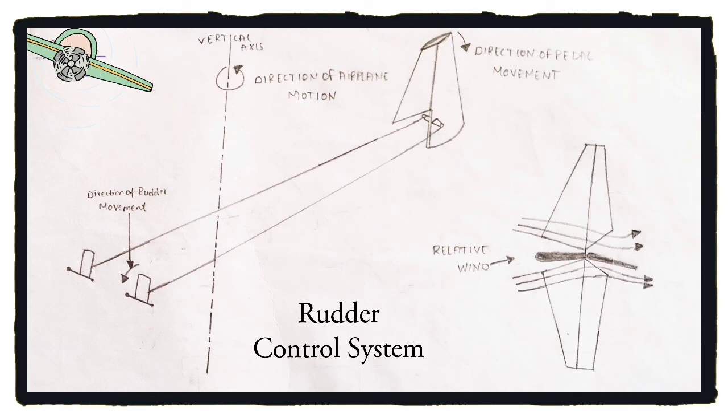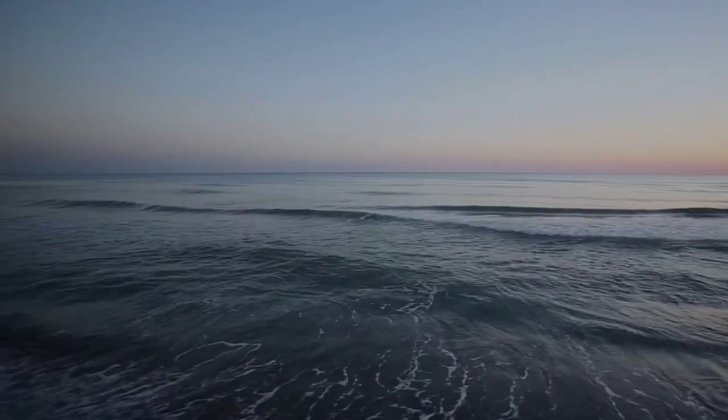In general, ailerons and rudders are used simultaneously to perform a smooth or coordinated turn.